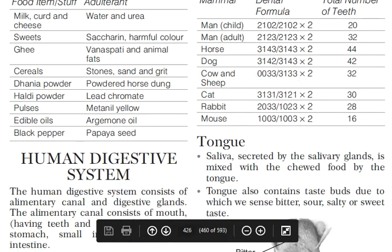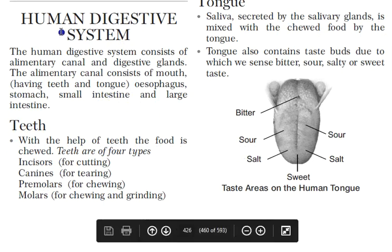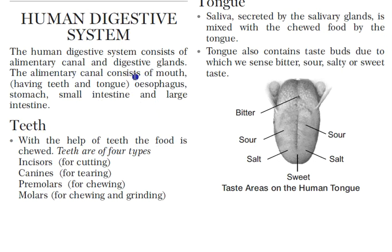Now come to the human digestive system. The human digestive system consists of the alimentary canal and digestive glands. The alimentary canal consists of the mouth (with teeth and tongue), esophagus, stomach, small intestine, and large intestine.